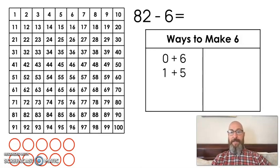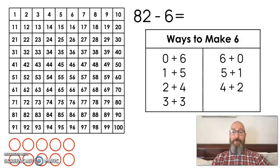We can do 0 plus 6, 1 plus 5, 2 plus 4, 3 plus 3, 6 plus 0, 5 plus 1, 4 plus 2. There's all these different ways to make 6. Which way do I use to break it apart?